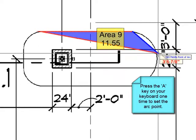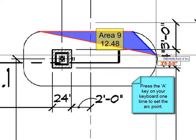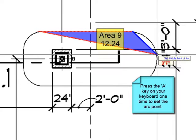And then immediately I'm going to hit my A key. And you'll see that the tool tip on the cursor changed to say click middle point of arc.